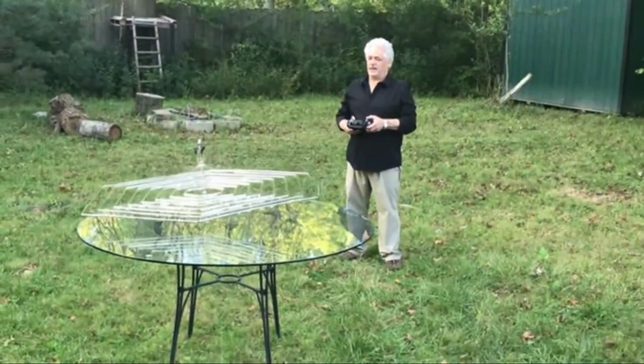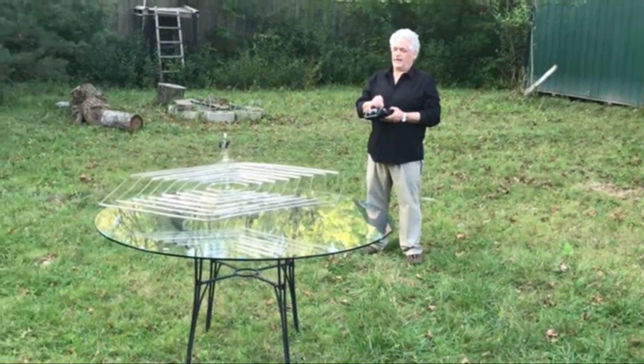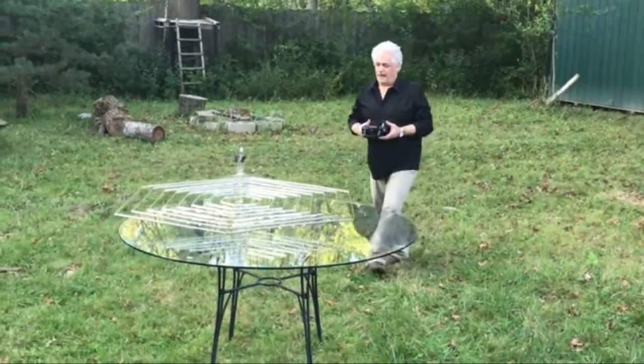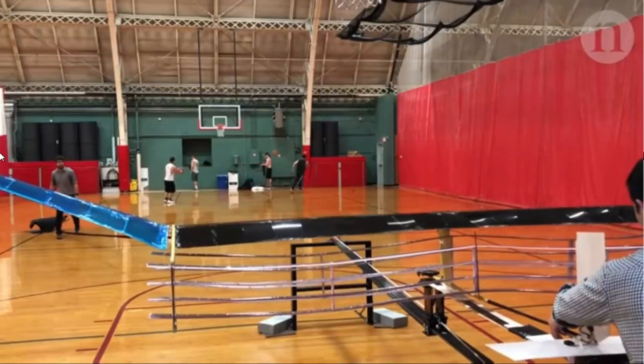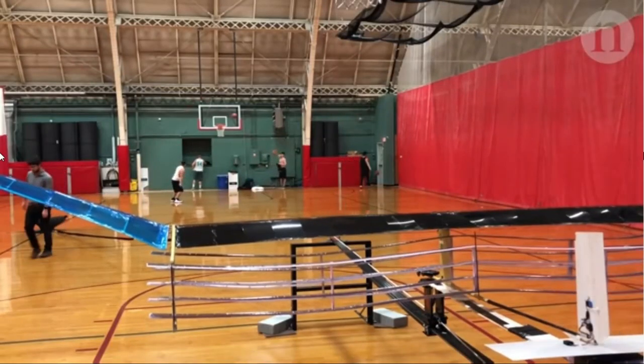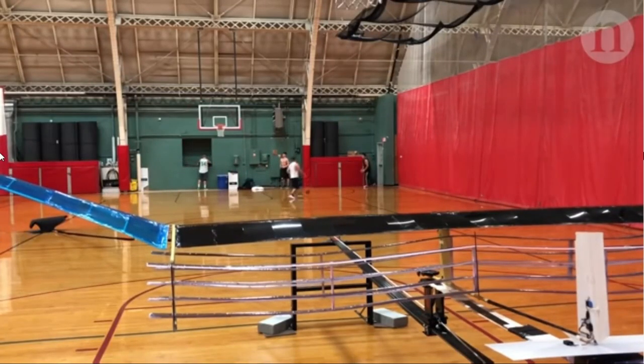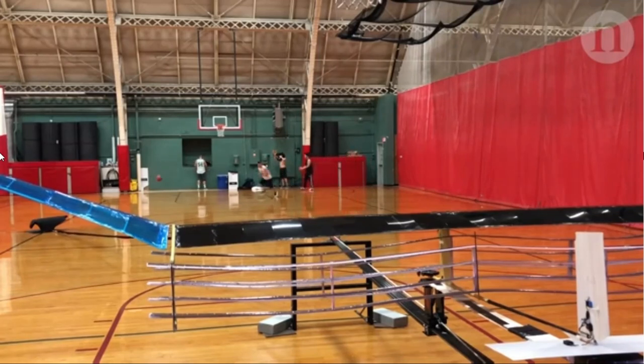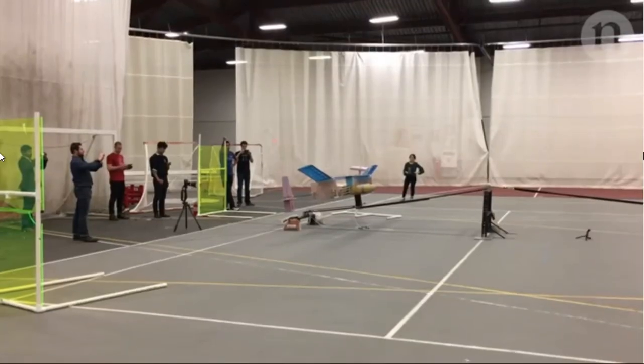Engineers do realize that we don't need a thrust to weight ratio of more than one to fly. We only need that for VTOL. Bearing this in mind, the MIT team set out to make a fixed-wing aircraft that could be launched from a sling. In 2018, they were able to show a sustained flight in an indoor space.